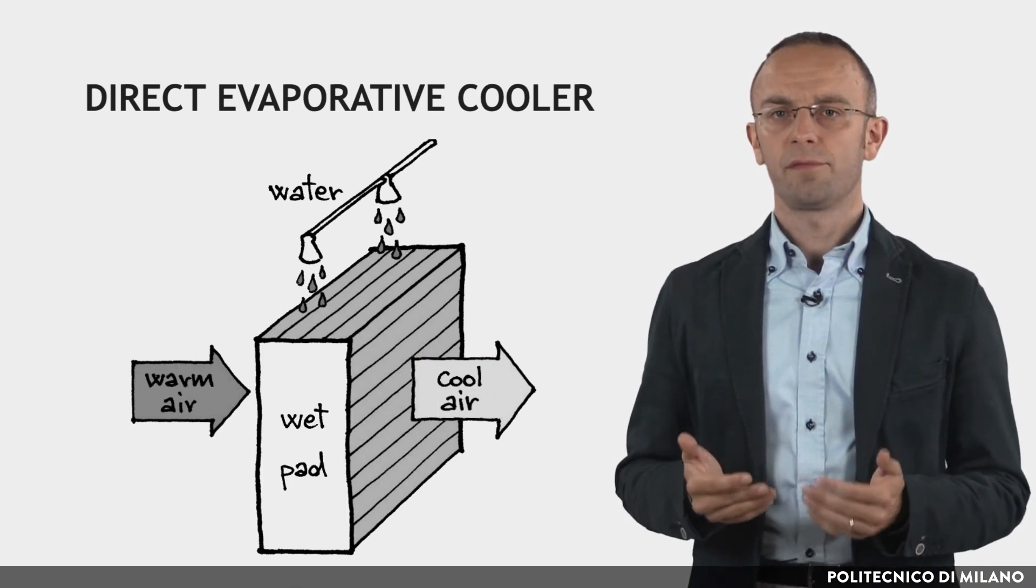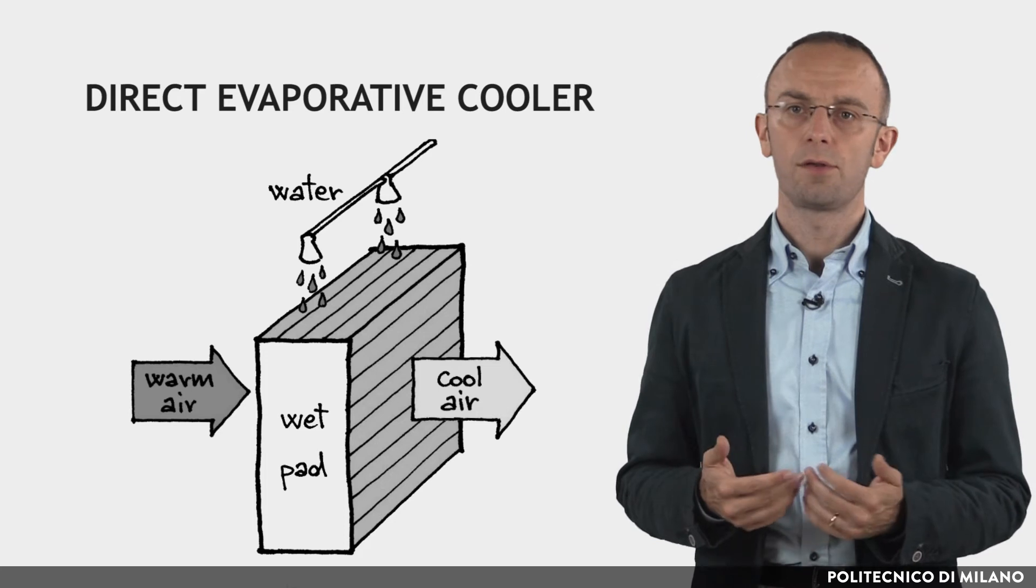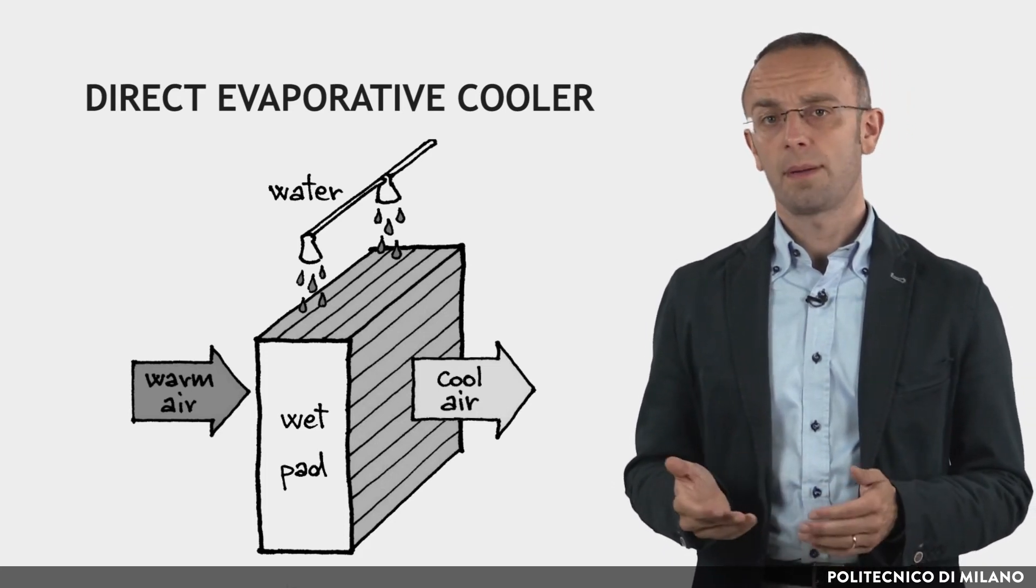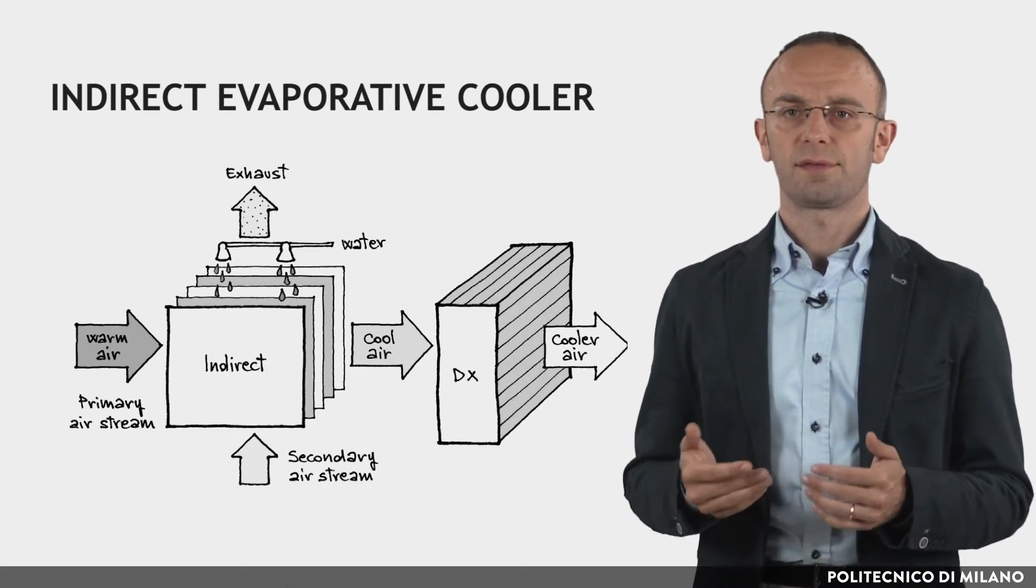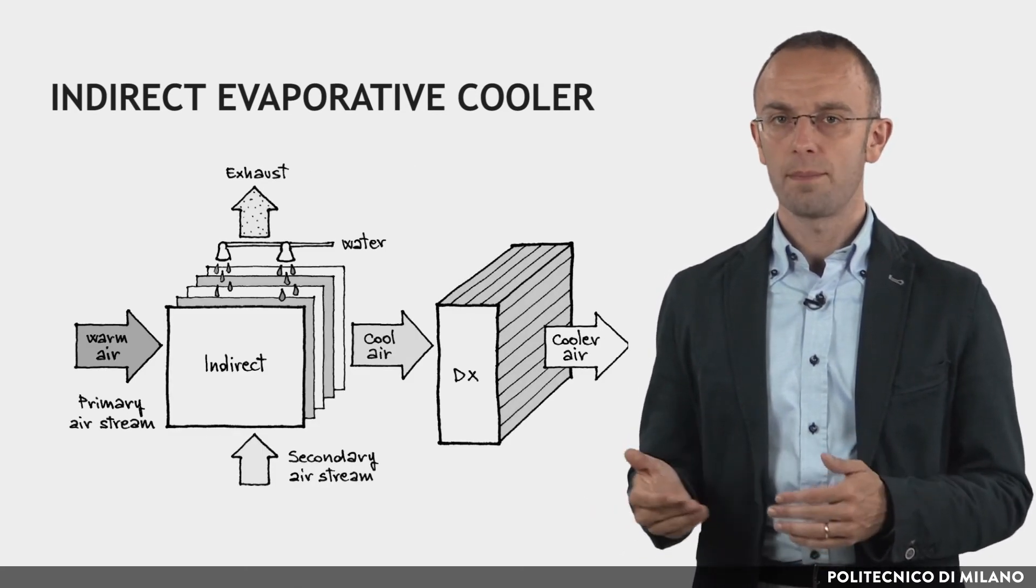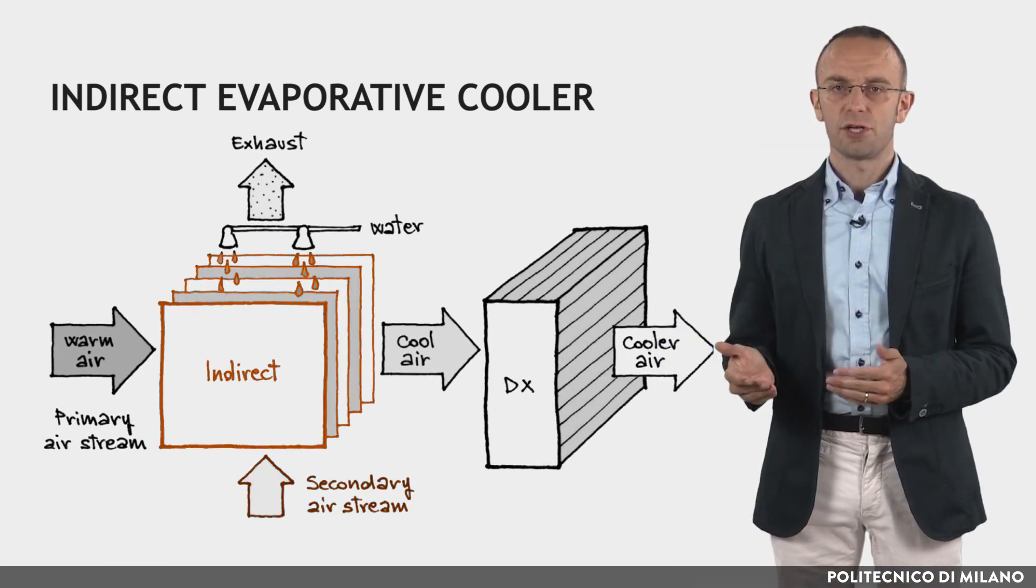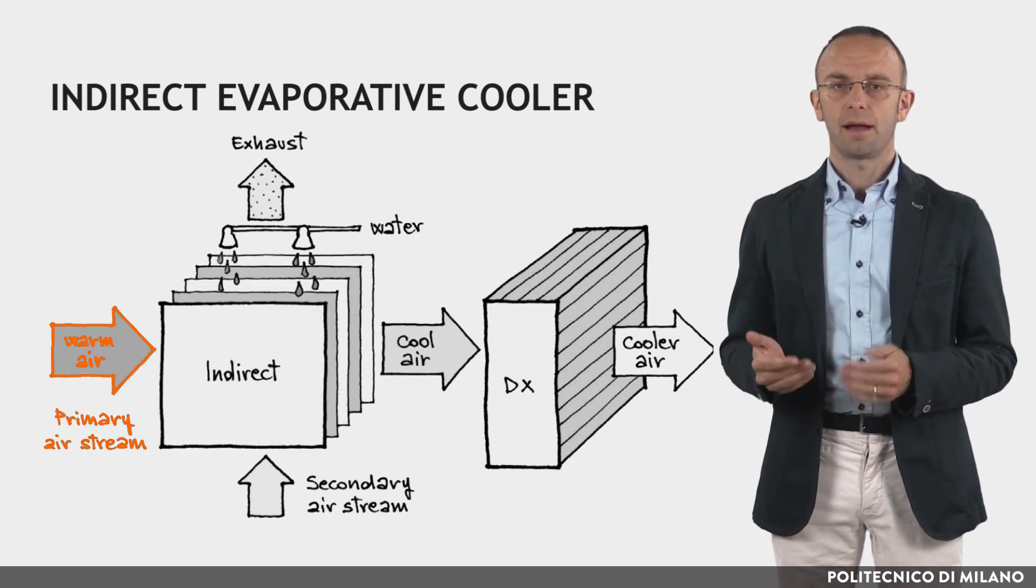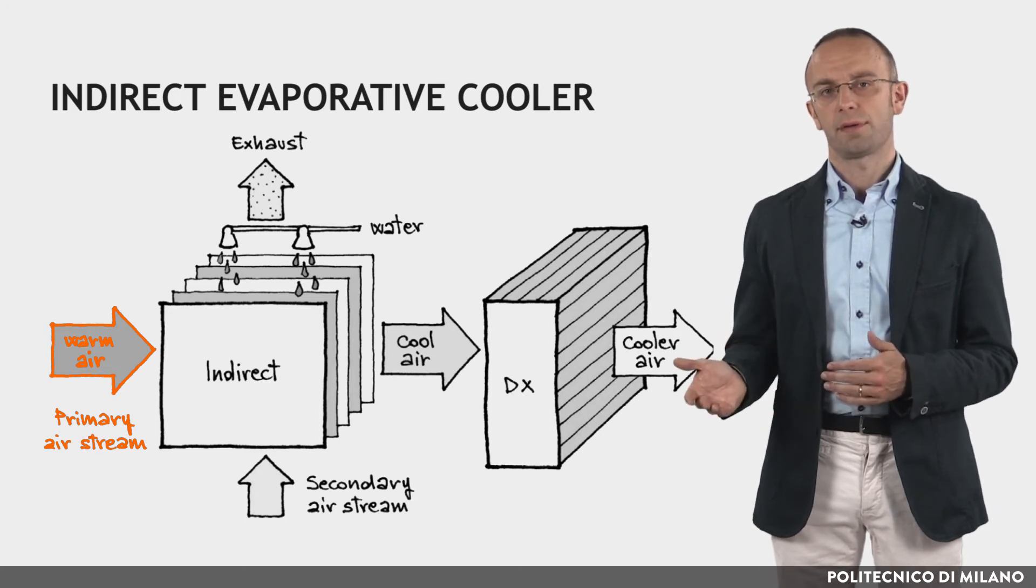With direct evaporative coolers, if outdoor air humidity is not very low, indoor humidity can be too high to be comfortable. This problem can be solved with indirect evaporative coolers, where a secondary air stream is cooled by water. The cooled secondary air stream goes through a heat exchanger where it cools the primary air stream. Indirect evaporative cooling doesn't add moisture to the primary air stream.